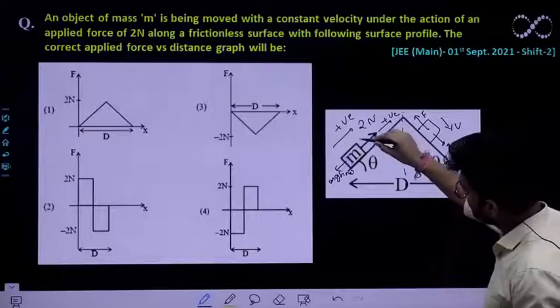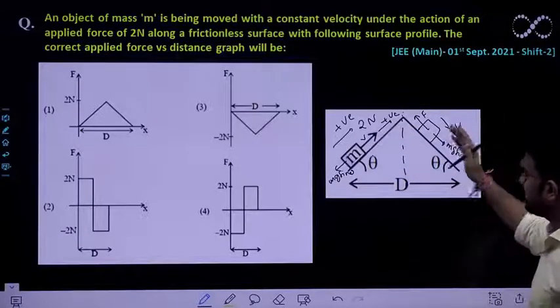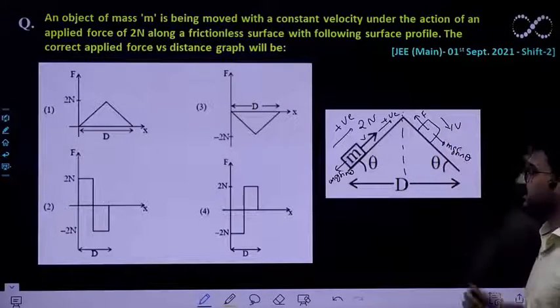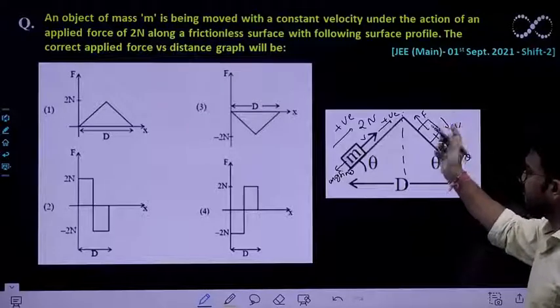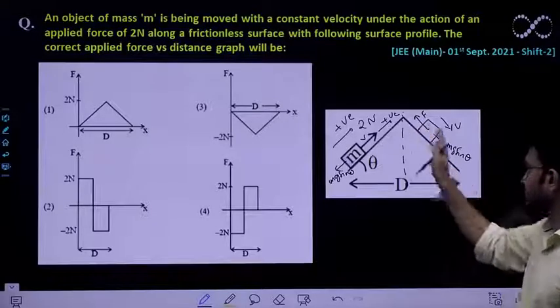Because here also it was moving with a constant speed of V. So while coming downward this force has to be applied in the backward direction. Then only it will be balancing mg sin theta. Now rest everything is clear because this force is in backward direction so this has to be negative as long as it is coming down.